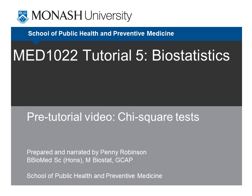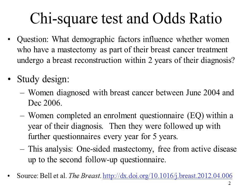This is a pre-tutorial video on chi-squared tests for the MED1022 population health tutorial on biostatistics. The question this example on chi-squared tests and odds ratio asks is: what demographic factors influence whether women who have had a mastectomy as part of their breast cancer treatment undergo a breast reconstruction within two years of diagnosis?